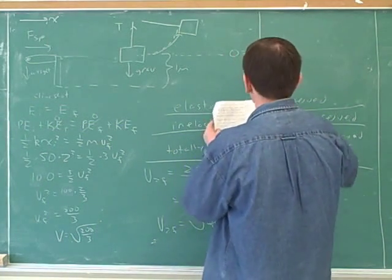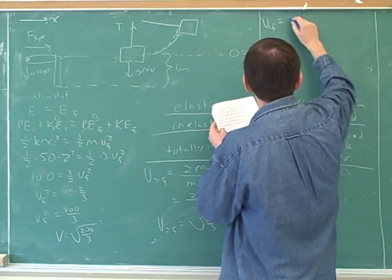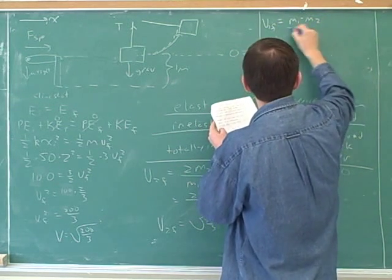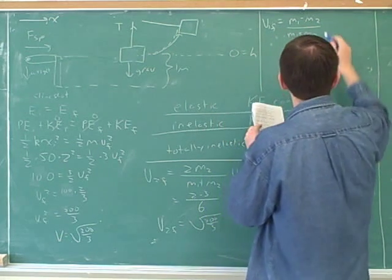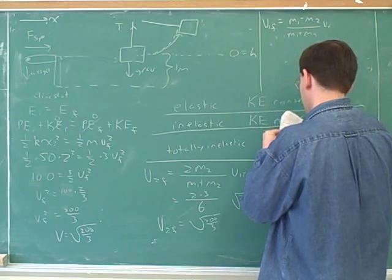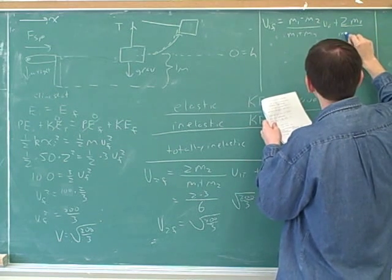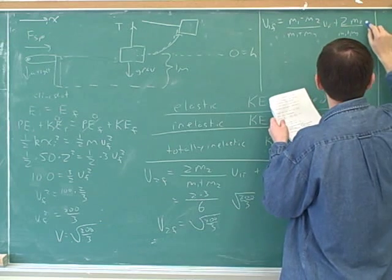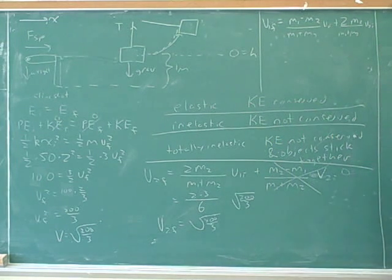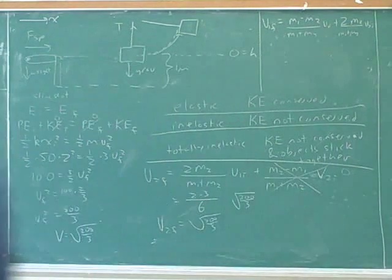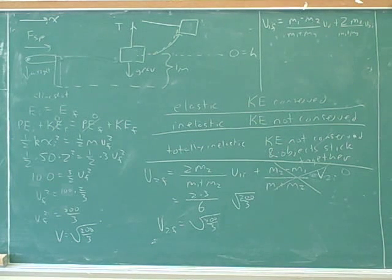So here we have the formula V1 final equals M1 minus M2 over M1 plus M2, V1 initial plus 2 M2 over M1 plus M2, V2 initial.